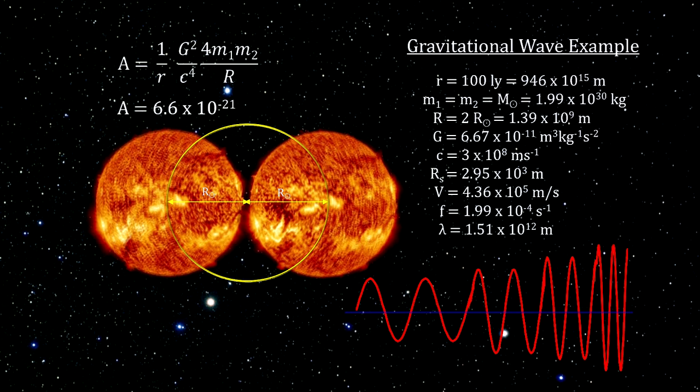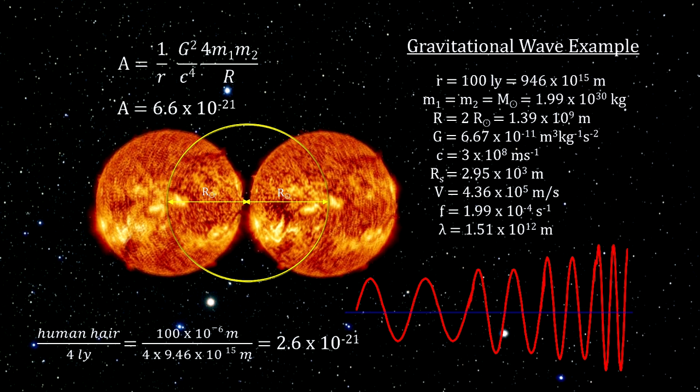This is a very small number. It is approximately the ratio of the width of a human hair to the distance to Alpha Centauri, four light years away.